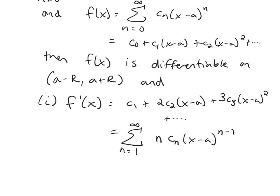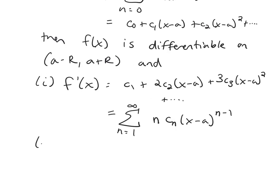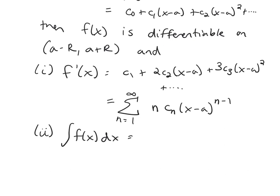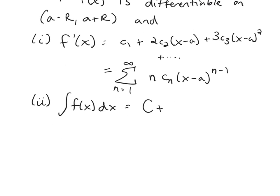So that's how you take a derivative, and then the second part is going to tell us how we take an integral. So part 2, if I want to integrate f(x), every time you take an indefinite integral, you always get the plus C. We don't want to forget that. So I'm going to put that at the beginning. I'm going to write C plus, and then you just need to integrate term by term just like we did derivative term by term. So when I integrate c0, you're going to get c0(x-a), plus c1(x-a)^2/2.